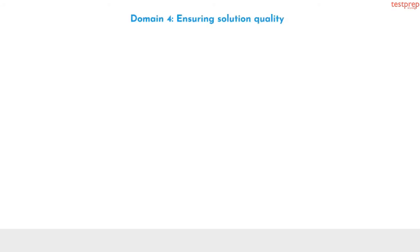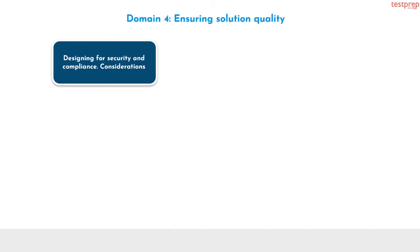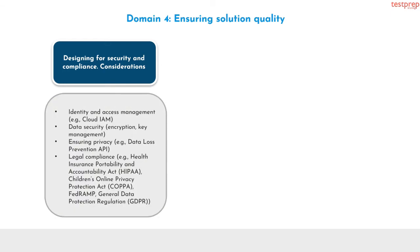Module 4, ensuring solution quality. Number 1, designing for security and compliance. It contains subtopics: first, identity and access management, for example Cloud IAM; second, data security, encryption, key management; third, ensuring privacy, for example data loss prevention API; fourth, legal compliance, for example Health Insurance Portability and Accountability Act, Children's Online Privacy Protection Act, FedRAMP, General Data Protection Regulation.